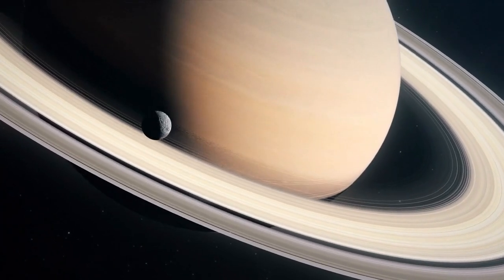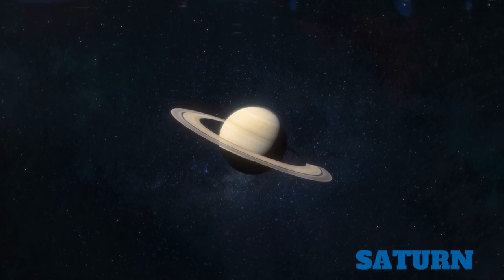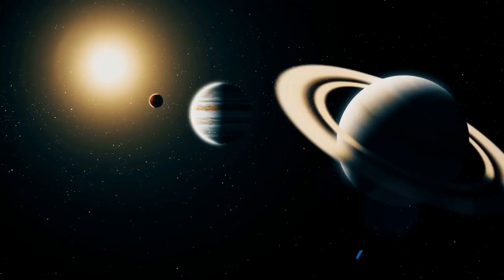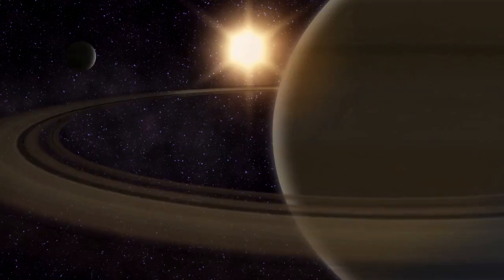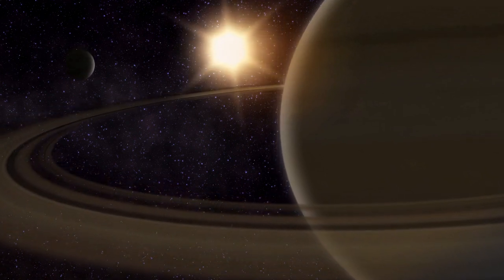Up next is Saturn, the jewel of the solar system. Saturn is the second largest planet in our solar system. It takes 29 Earth years for Saturn to orbit the Sun.